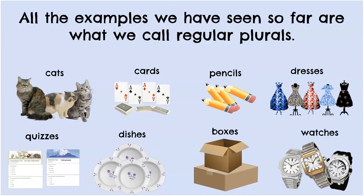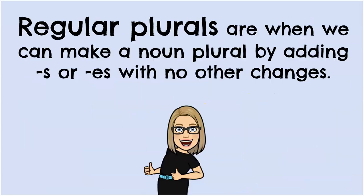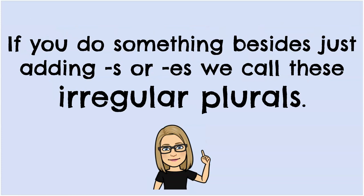All the examples we've seen so far are what we call regular plurals. Regular plurals are when we can make a noun plural by adding S or ES with no other changes. If you do something besides just adding S or ES, we call these irregular plurals.